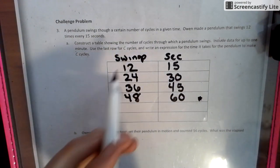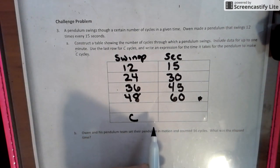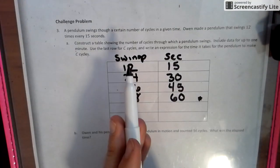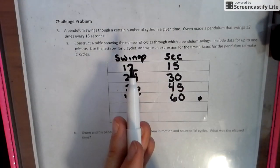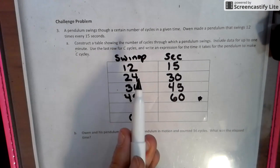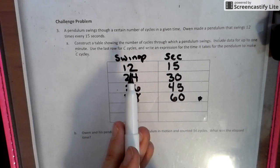But notice how they want the last one to be C. Well, we got to figure out per one. Right now that's 12 swings. And so we have to find out what one is. So if we can find out what one is,